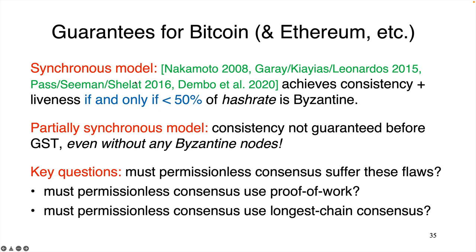Now that we know courtesy of Bitcoin that the permissionless consensus design space is not empty, it's our duty to ask: what else is in that design space? Are there other permissionless consensus protocols that do not suffer from Bitcoin's flaws? Can we achieve permissionless consensus tolerating more than 50% Byzantine hash rate in the synchronous model? Can we have permissionless consensus with interesting consistency guarantees in the partially synchronous model? Or are these flaws an inevitable consequence of working in the permissionless setting? Sub-questions would be: is proof of work necessary for permissionless consensus — Bitcoin shows it's sufficient, but is it the only way? And is the longest chain rule essential to permissionless consensus, or could you have something quite different?